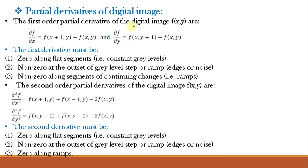The first order partial derivative of the digital image f(x,y) are: δf/δx = f(x+1, y) − f(x, y) and δf/δy = f(x, y+1) − f(x, y). Similarly, the second order partial derivatives are: δ²f/δx² = f(x+1, y) + f(x−1, y) − 2f(x, y) and δ²f/δy² = f(x, y+1) + f(x, y−1) − 2f(x, y).